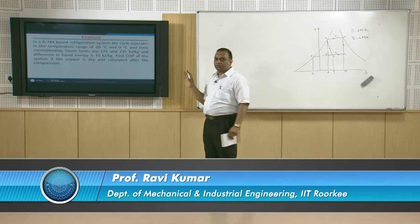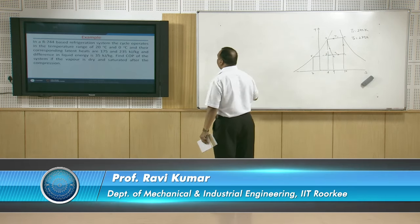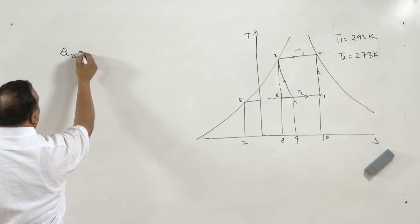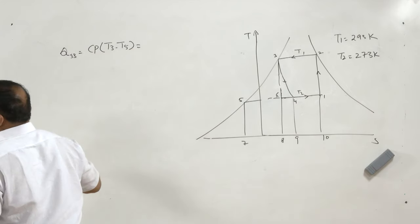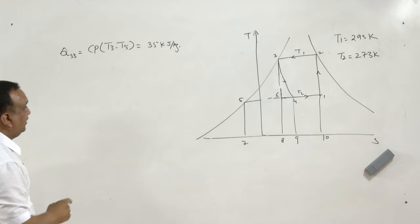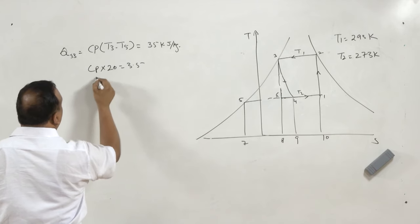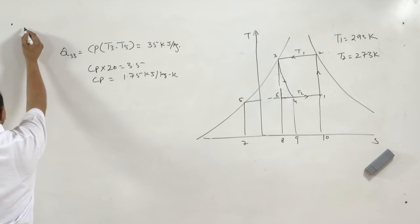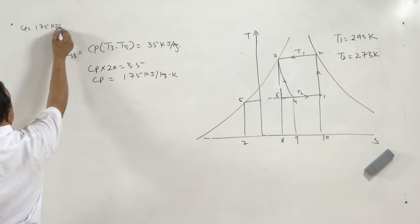We do not have any information about the entropy at point 3 or point 5. However, we have the value of the liquid enthalpy difference: Q from 5 to 3 equals Cp × (T3 − T5) = 35 kJ/kg, and T3 − T5 = 20 K. So Cp × 20 = 35, giving Cp = 1.75 kJ/kg·K.